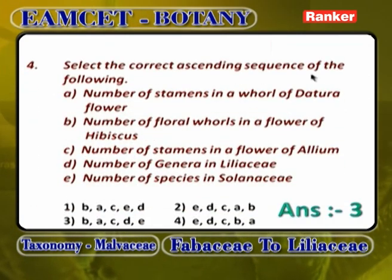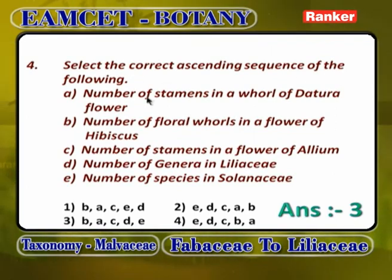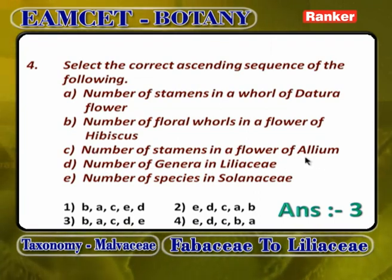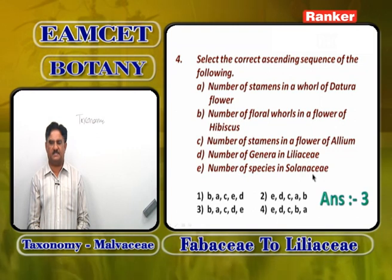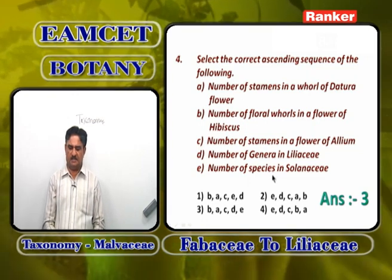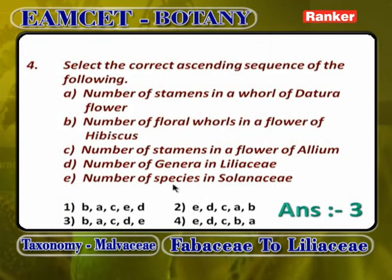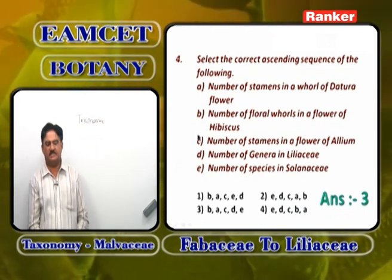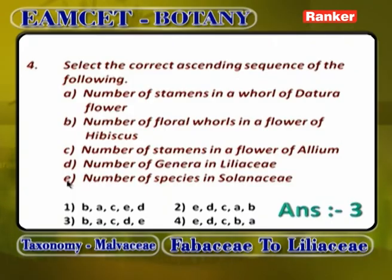Select the correct ascending order sequence: number of stamens in Datura = 5; number of floral whorls in Hibiscus = 10 (calyx and corolla); number of stamens in Allium = 6; number of genera in Liliaceae = 254; number of species in Solanaceae = 2200. Ascending order means very small to large: B (5), A (10 — wait, 5), so B, A, C, D, E is the answer.